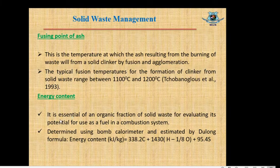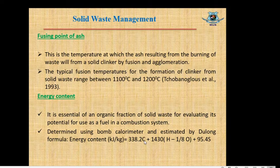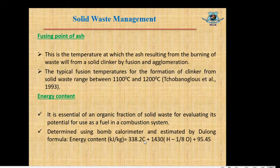Energy content. Generally, energy content is the process to justify whether a material can be used as fuel in a combustion system. The energy content can be determined by bomb calorimeter or estimated by Dulong's formula: Energy content (kJ/kg) = 337C + 1,428(H − O/8) + 9.3S, where C is the percentage of carbon, H is the percentage of hydrogen, O is the percentage of oxygen, and S is the percentage of sulfur. If we know these four items, we can easily determine the energy content.